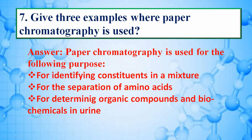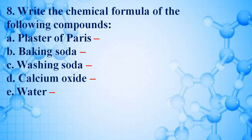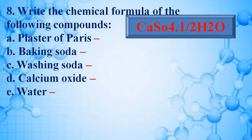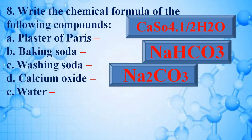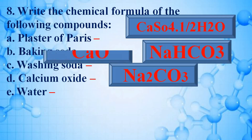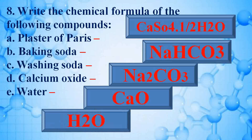Read the chemical formulas of the following: plaster of paris — CaSO₄·½H₂O; baking soda — NaHCO₃; washing soda — Na₂CO₃; calcium oxide — CaO; water — H₂O.